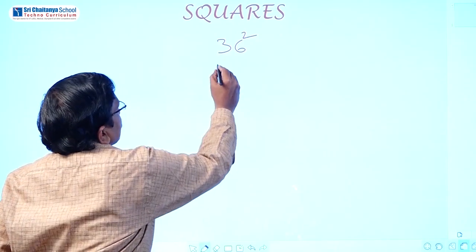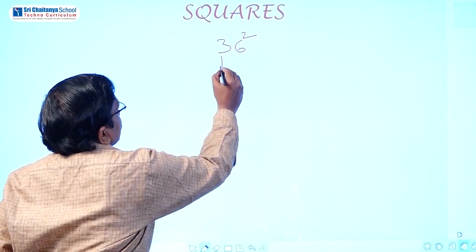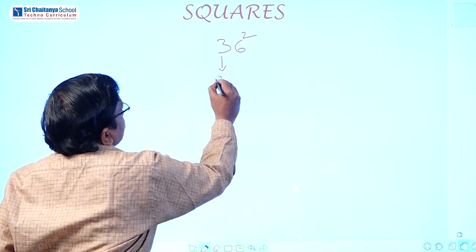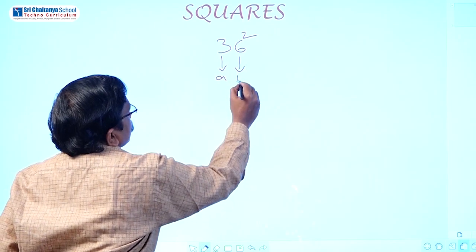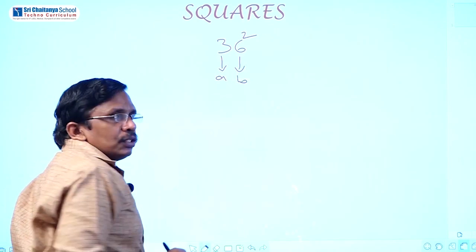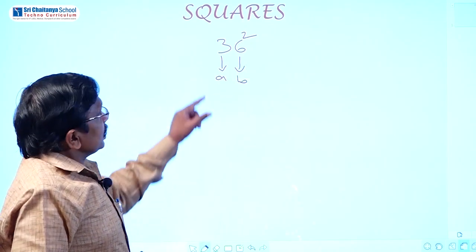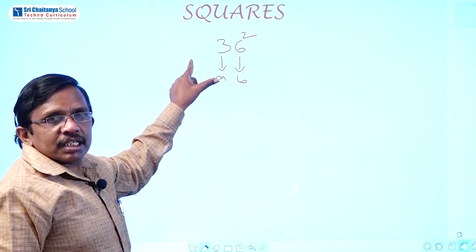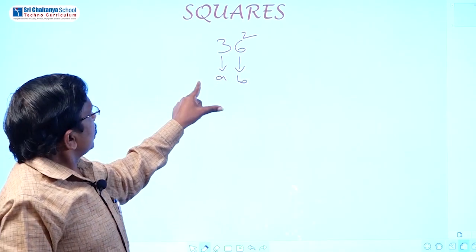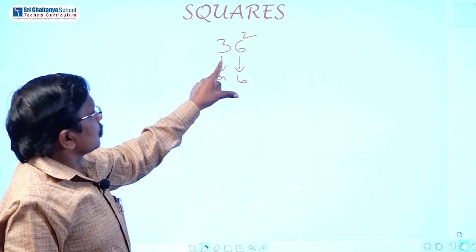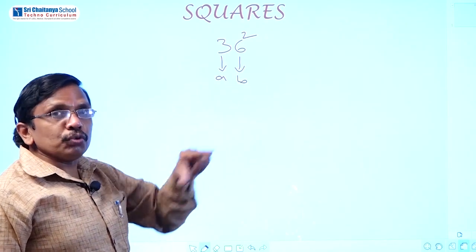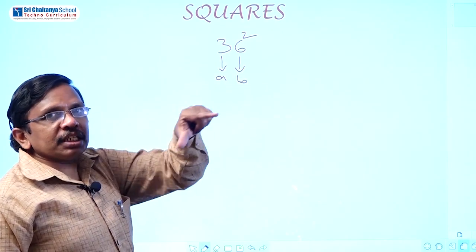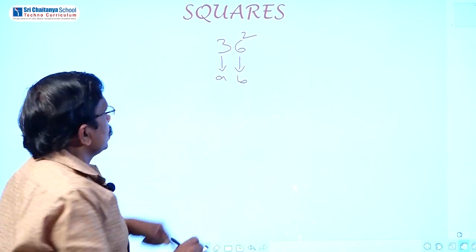So first you have to consider A as 3 and B as 6. Then prepare these terms: A square, 2AB, B square.